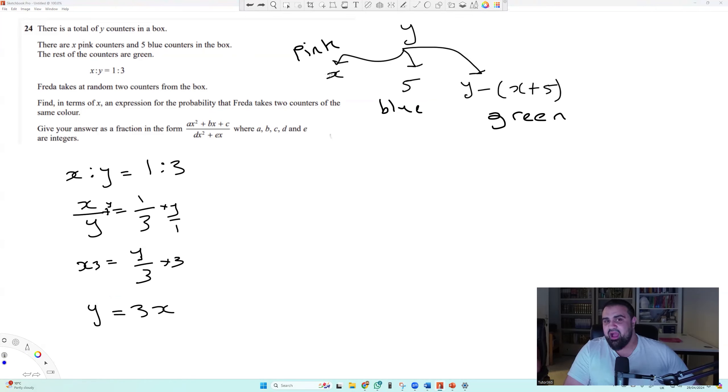Now we can solve. I'm going to times both sides by Y to give me X is equal to Y over three. So now I'm going to times both sides by three, so I'm going to get Y equals to three X. This is basic solving.